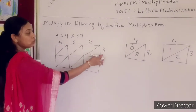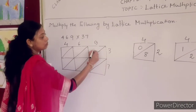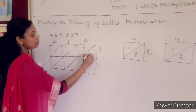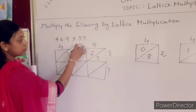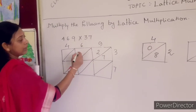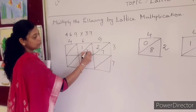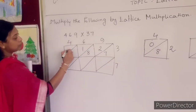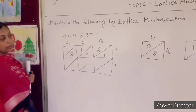So 9 into 3 — 9 into 3 is 27 — so you write 27 in this way. After that 3 into 6, 18. After that 3 into 4, 12.